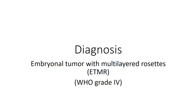The diagnosis is embryonal tumor with multilayered rosettes, ETMR. We did not confirm the C19 amplicon in this particular case, so strictly speaking it should be 'not otherwise specified,' but it is almost certainly present. These are very aggressive tumors with a predilection for young children. They can have many different patterns. This pattern was previously described as 'embryonal tumor with abundant neuropil and true rosettes' (ETANTR) by Berger and Eberhart. The ETMR category now encompasses other tumor patterns including medulloepithelioma, which share the same C19 amplicon.